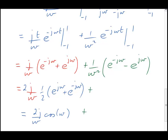Now the combination 1 half times the thing in brackets, e to the j omega plus e to the minus j omega, is precisely the Euler result for cos of omega. So we get the result shown at the bottom.